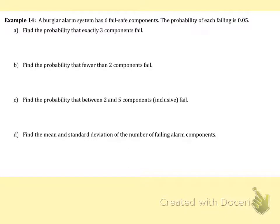This is example 14 from the supplemental topic involving discrete random variables from your student packet. It says a burglar alarm system has six fail-safe components. The probability of each failing is 0.05.